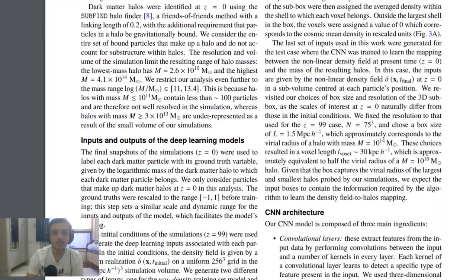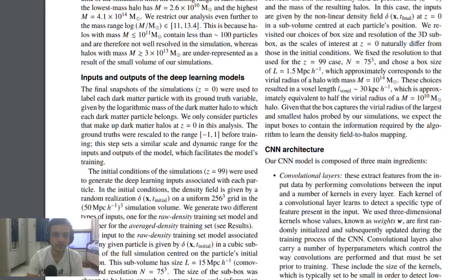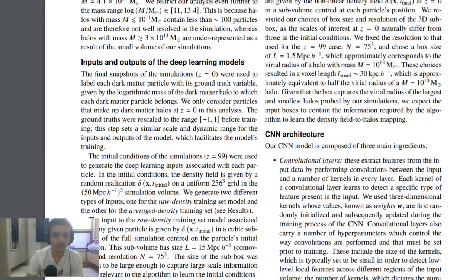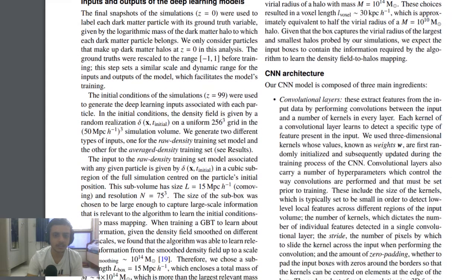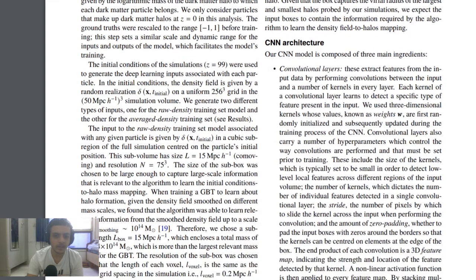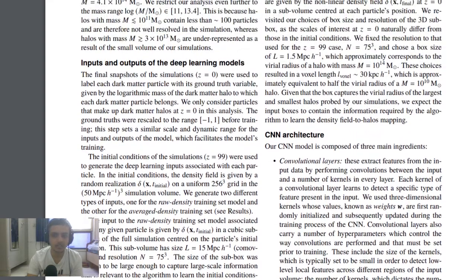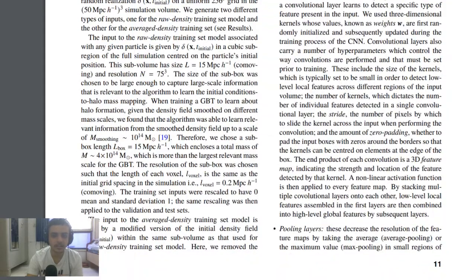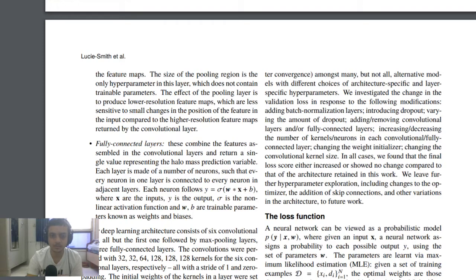Now they talk about the inputs and outputs used for the deep learning model. The initial condition started the simulation at z equals 99 on a data cube. The architecture was a simple 3D CNN with leaky ReLU activations and pooling layers. It was a fully connected network.